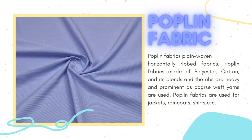Poplin fabric. Poplin is a plain-woven, horizontally ribbed fabric. Poplin fabrics are made of polyester, cotton, and blends, and the ribs are heavy and prominent as coarse weft yarns are used. Poplin fabrics are used for jackets, raincoats, shirts, etc.